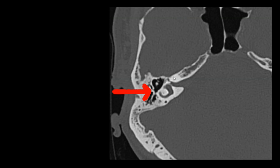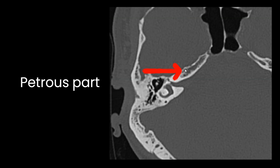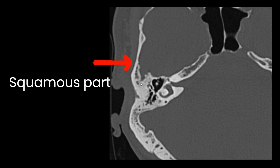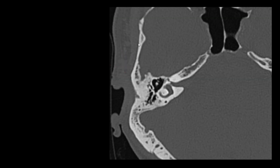The middle ear and inner ear are placed in the tympanic part. This conical part is the petrous part of temporal bone appearing on the same sections, and this flattened part anteriorly is the squamous part of temporal bone.